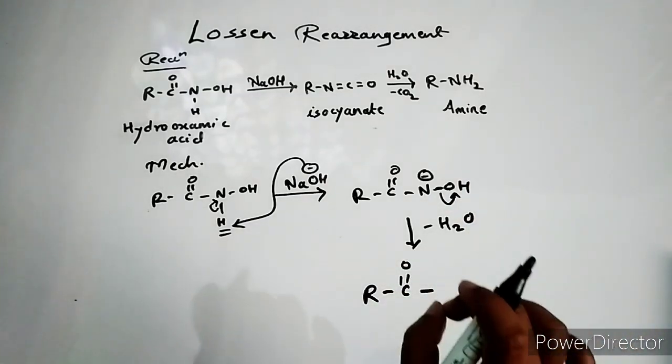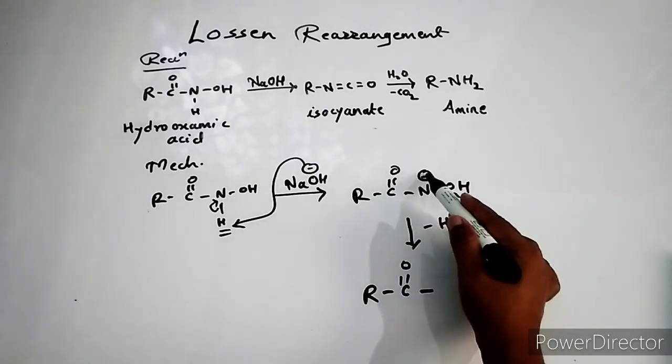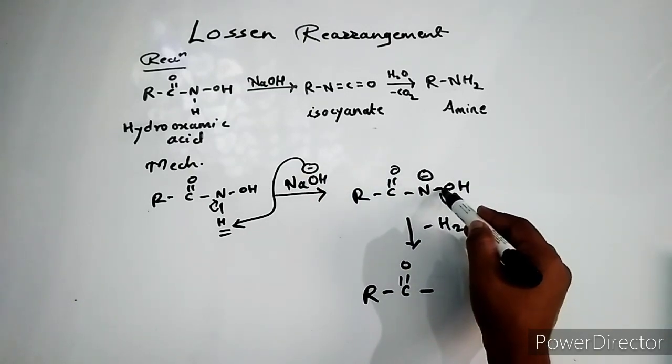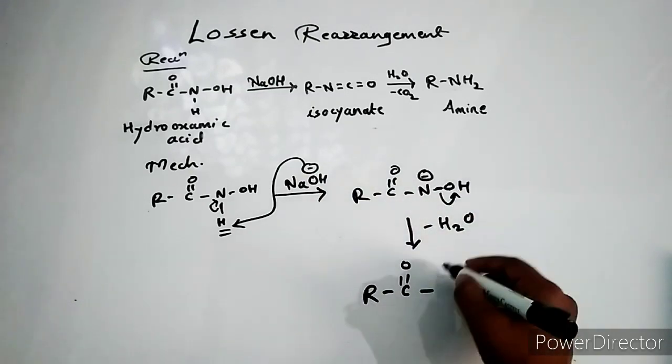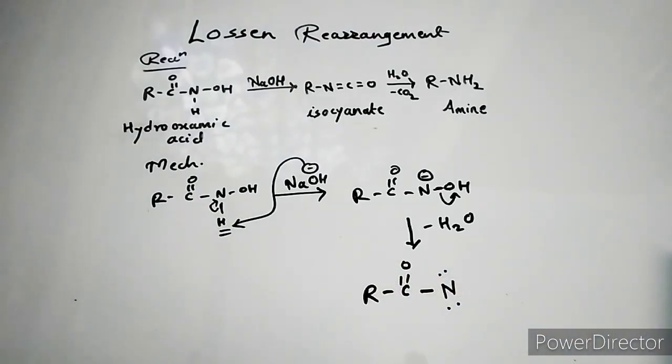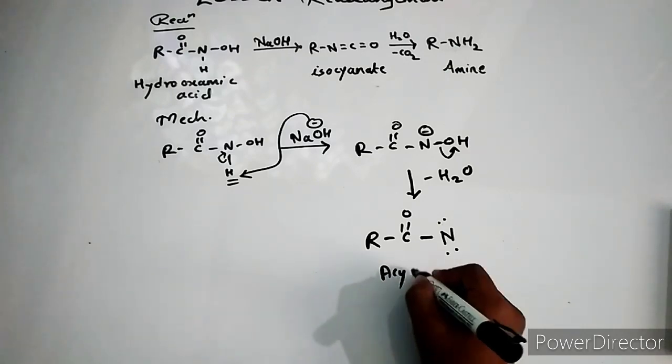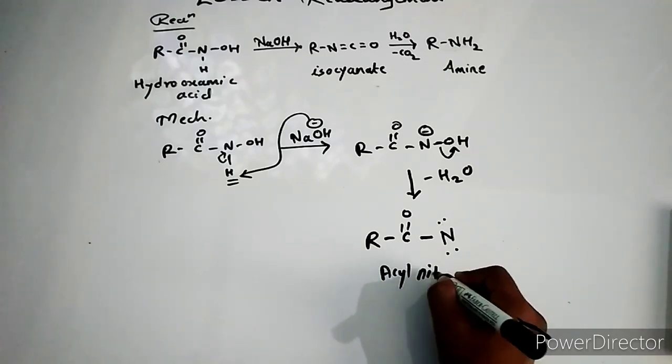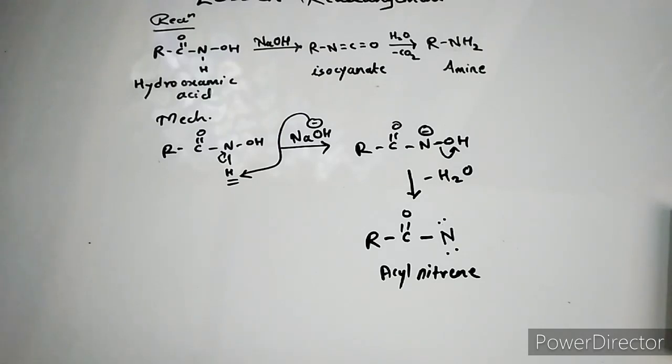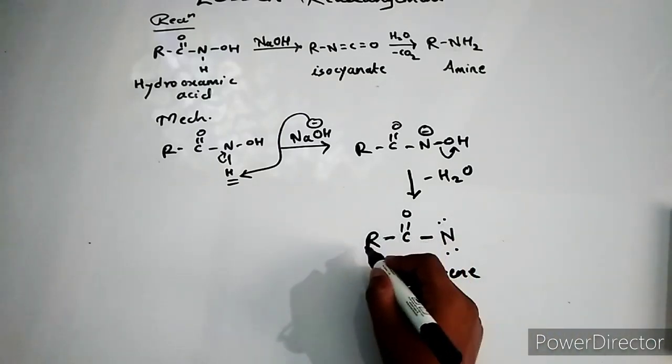We saw in the Curtius rearrangement, when your nitrogen has unpaired electrons and at the same time one of the leaving groups leaves out, you are going to get a nitrene as we saw in the last reaction. Carbene is also being formed in the same conditions. So now here we are with the acyl nitrene, and as in the last reactions, here only the rearrangement step takes place.